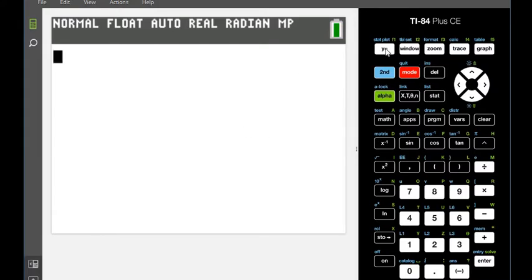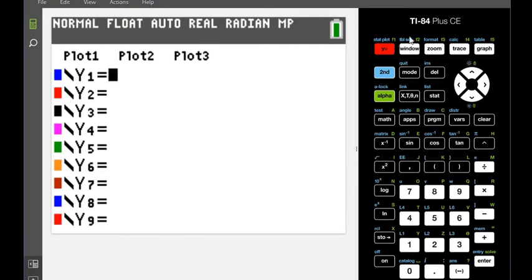So to graph this, what we're going to do is go to the y equals screen. I am using the color edition. If you have the 83 or the 84 or the 84 plus that's not color edition, it would be the same thing. You just won't get the different colored lines. So for our first line, we would put in the y1.